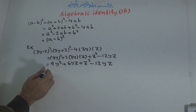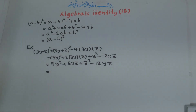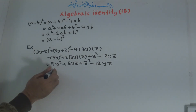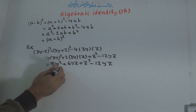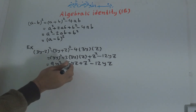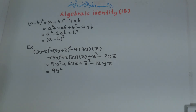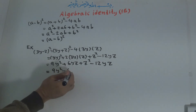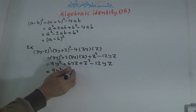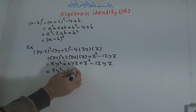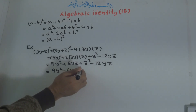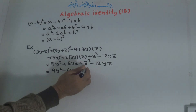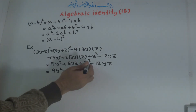Now we simplify by adding the like terms. Positive 6yz and negative 12yz combine to give negative 6yz. So we have 9y² - 6yz + z².